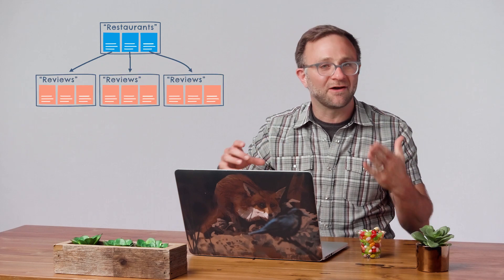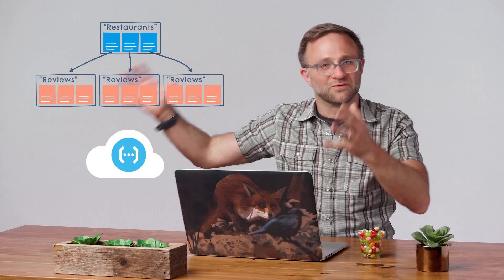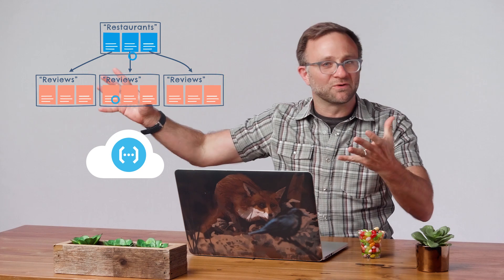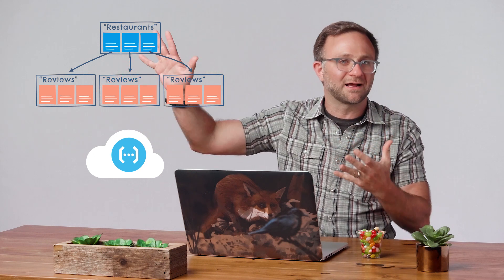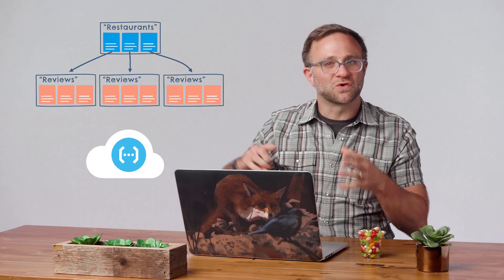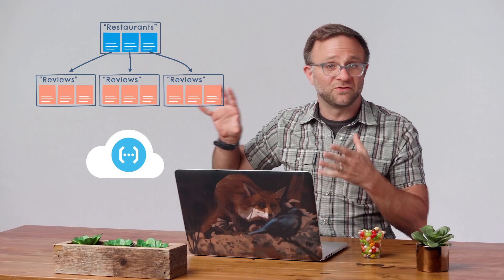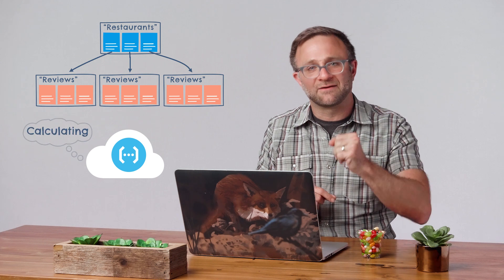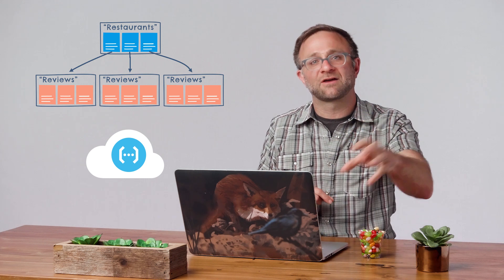But what if I decided I was going to calculate the average rating by gathering up all the reviews in the review sub-collection, reading in every review score, and then writing the average back to the original restaurant document? This is going to generate a whole bunch of extra reads that you might not want to perform every single time a user changes a review. It would be better to use some clever math — like if you store an average review and a number of reviews value on that restaurant document, you could change the average for a new review without having to go back through all the other review documents. Or if you really like the idea of writing a function that looks at every review for a restaurant, at least make it a cron job that runs only once every few days.